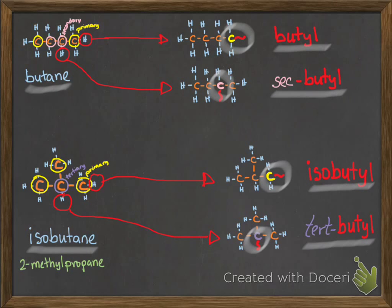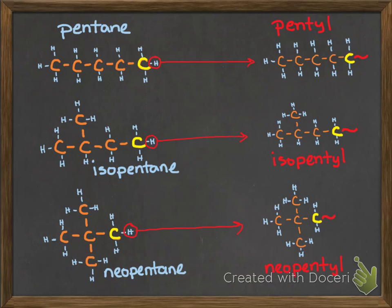Finally, we have the three alkyl groups with common names from pentane. We have three hydrocarbons: pentane, isopentane and neopentane with the corresponding alkyl groups.